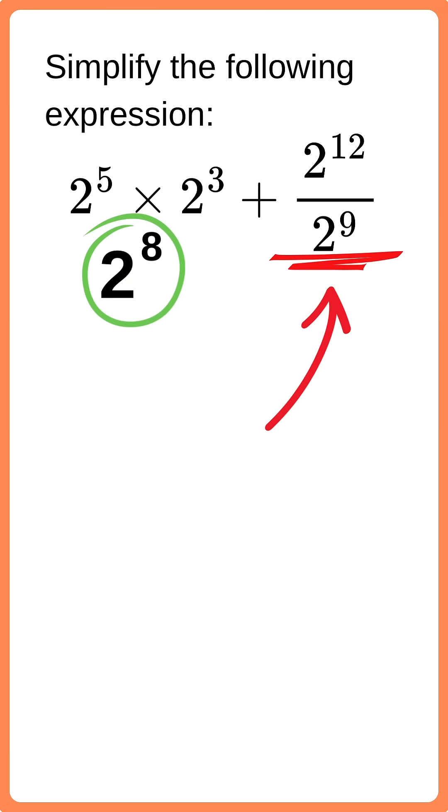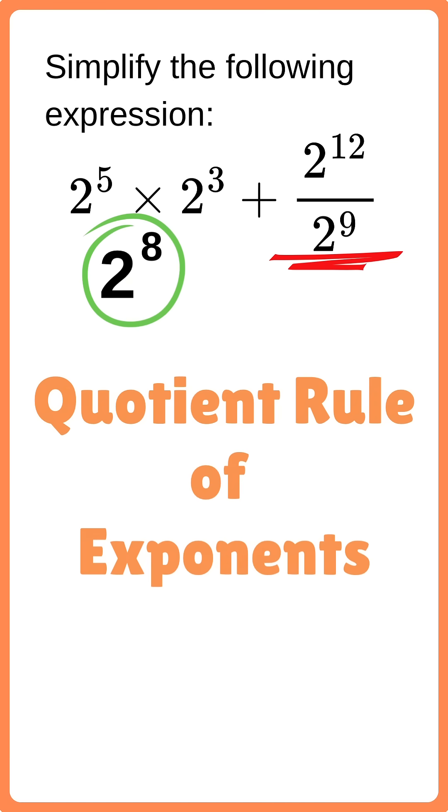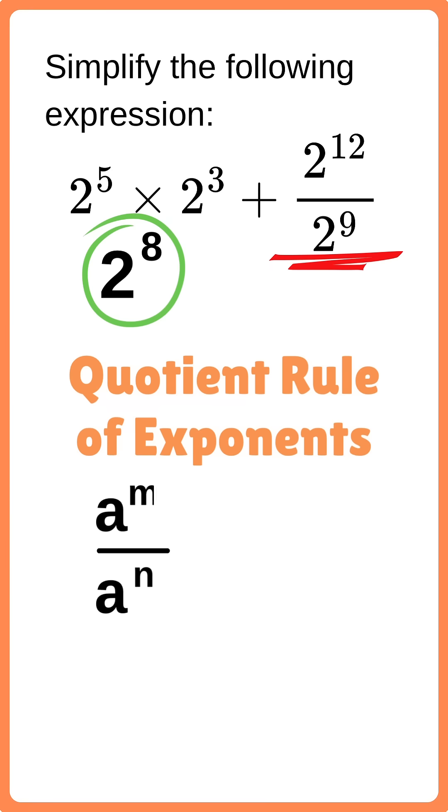For the second part of the expression, we should use the quotient rule of exponents, according to which, a to the power of m divided by a to the power of n equals a to the power of m minus n.